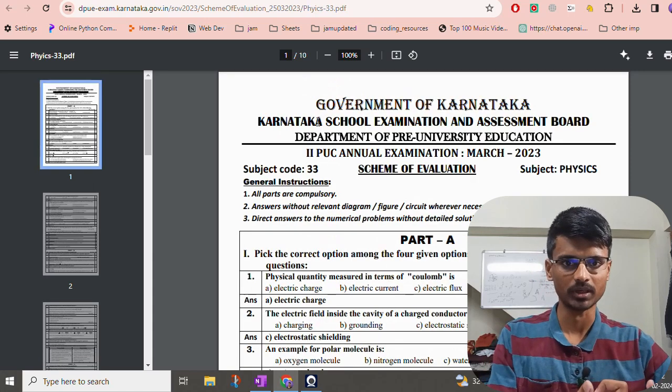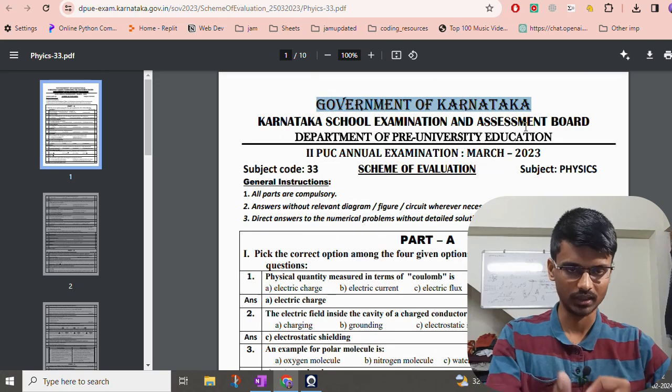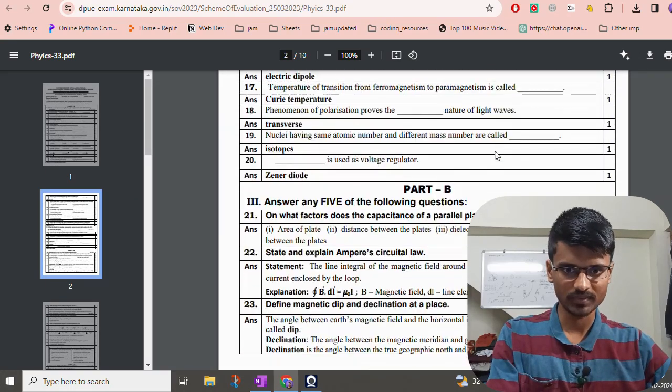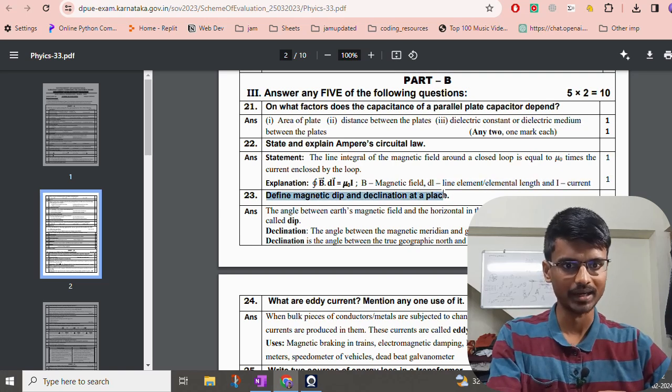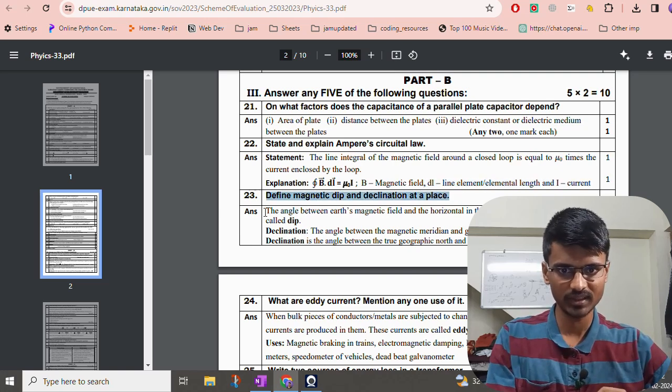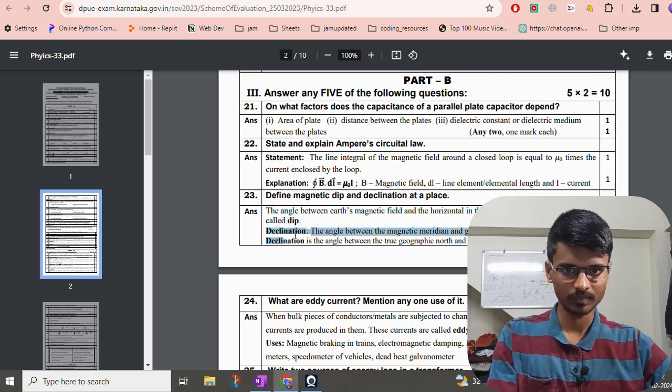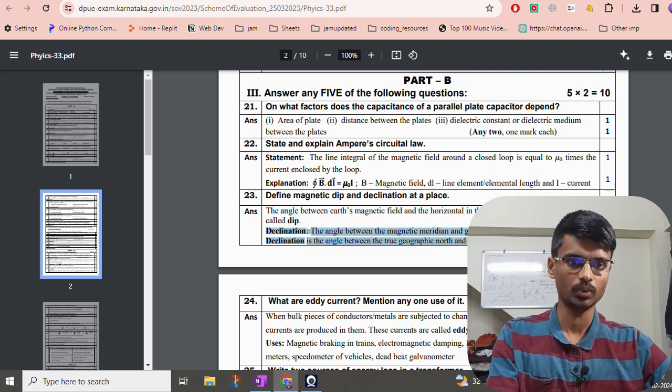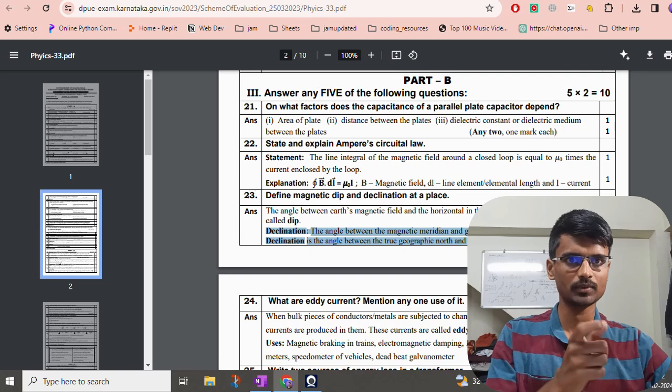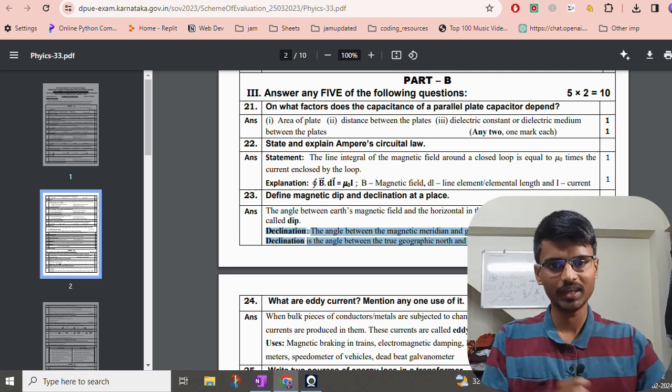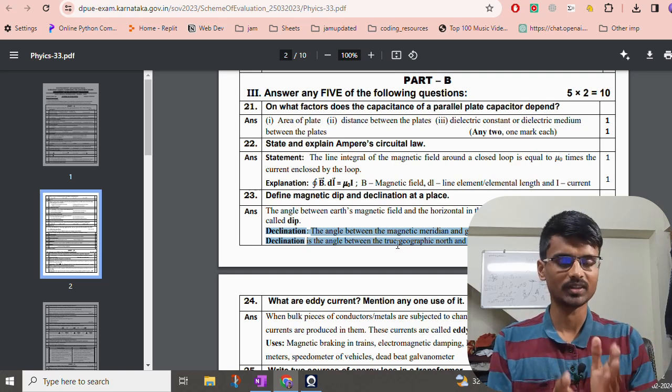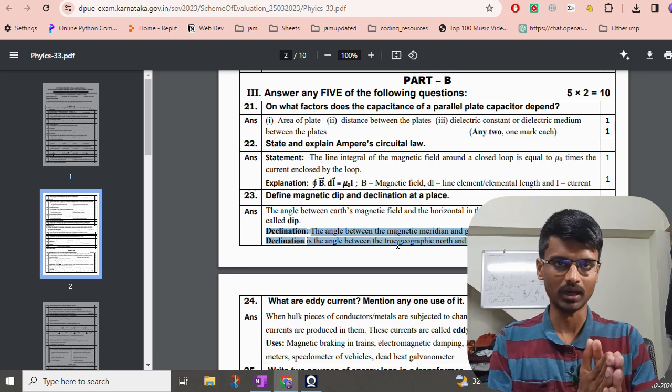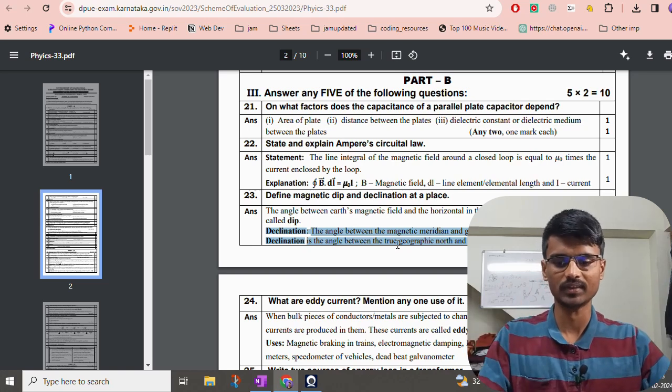Similarly, let us look at the physics paper. This is again Government of Karnataka scheme of valuation. As you can see here, this is a two mark question. Here, they are asking you define magnetic dip and declination at a place. So this is the definition for the dip. And for declination, they have given here two definitions. If either of them the student is writing, the teacher must award marks. If you are writing something other than this, then you will not get any marks. If you are sticking to the standard answers, you are definitely going to get marks and you will not lose marks.